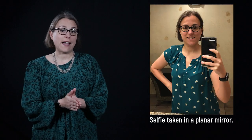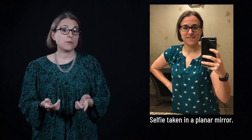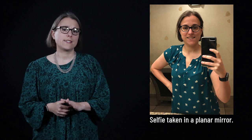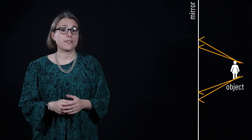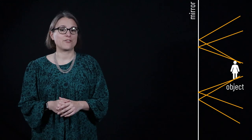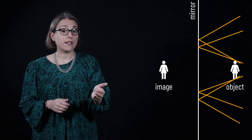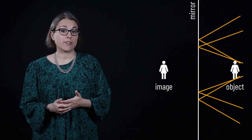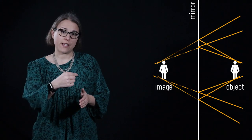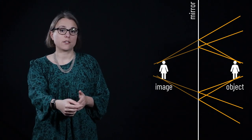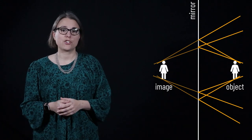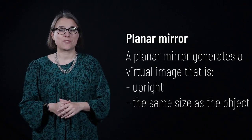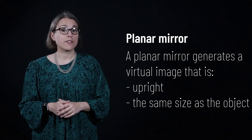Let's see how the law of reflection explains images in planar, concave, and convex mirrors. A planar mirror is a flat, smooth, reflective surface — one you probably use every morning. Light reflects off a planar mirror obeying the law of reflection: the angle of incidence equals the angle of reflection. If we trace the reflected rays of an object backward, they converge on points behind the mirror, creating a virtual image. Our eyes perceive the diverged light as coming from this virtual image, which appears upright and the same size as the object.